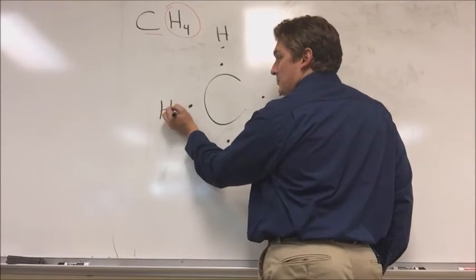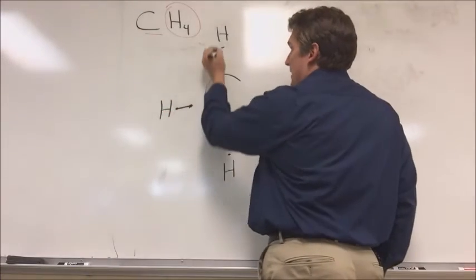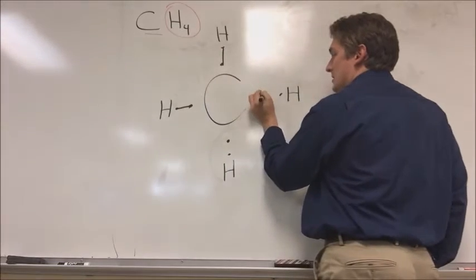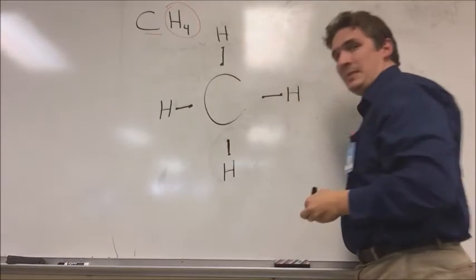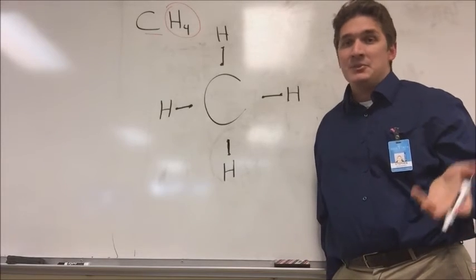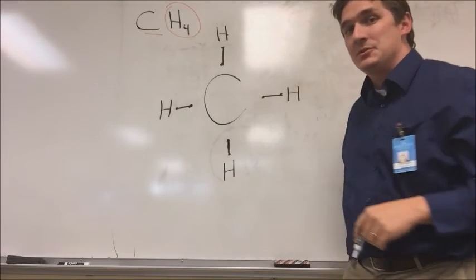So we've got one electron here, we're going to connect this with an electron of hydrogen. We've got top bond, right bond, and our bottom bond. And since we're out of electrons on the central atom, there's nothing more we can do. So we've correctly drawn this Lewis structure.